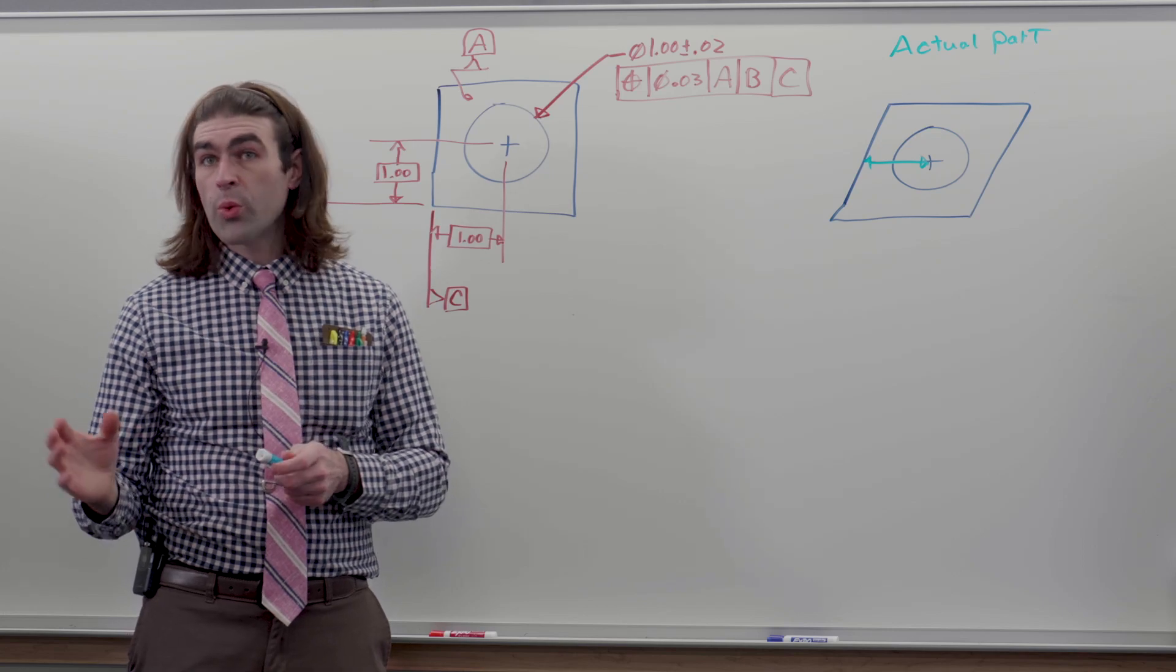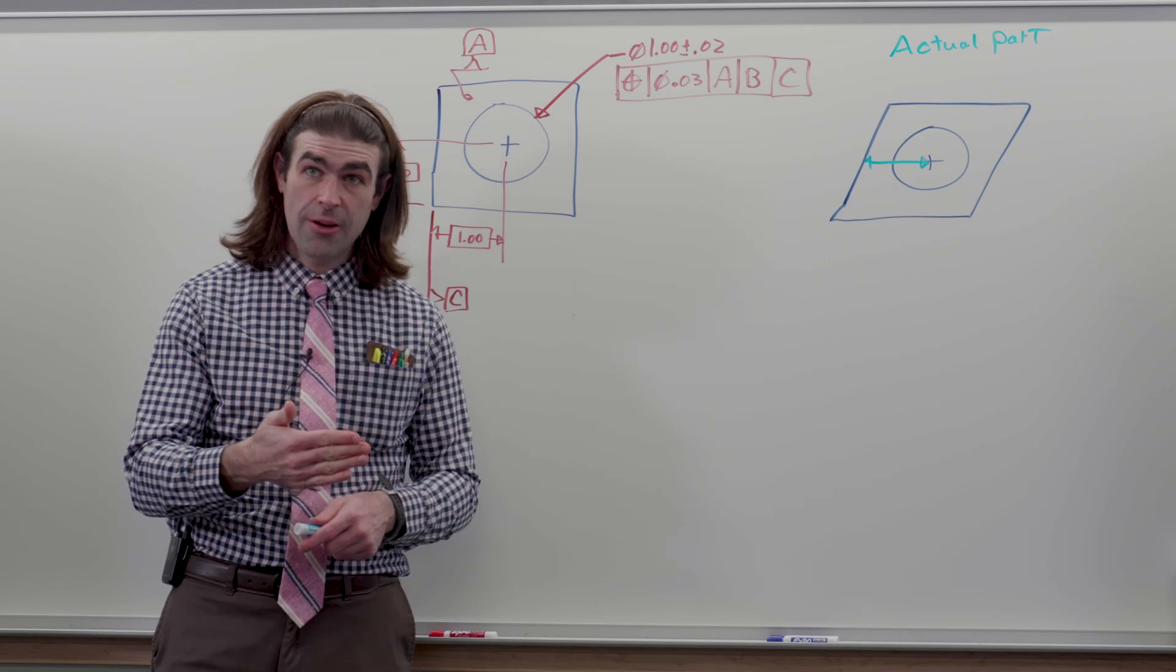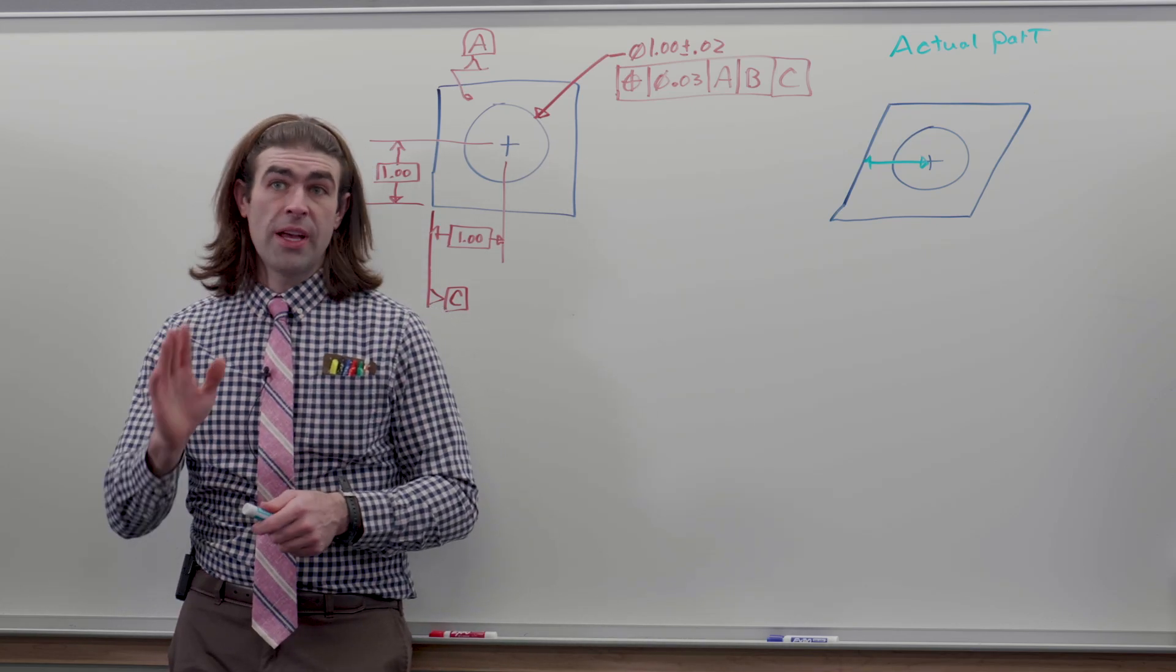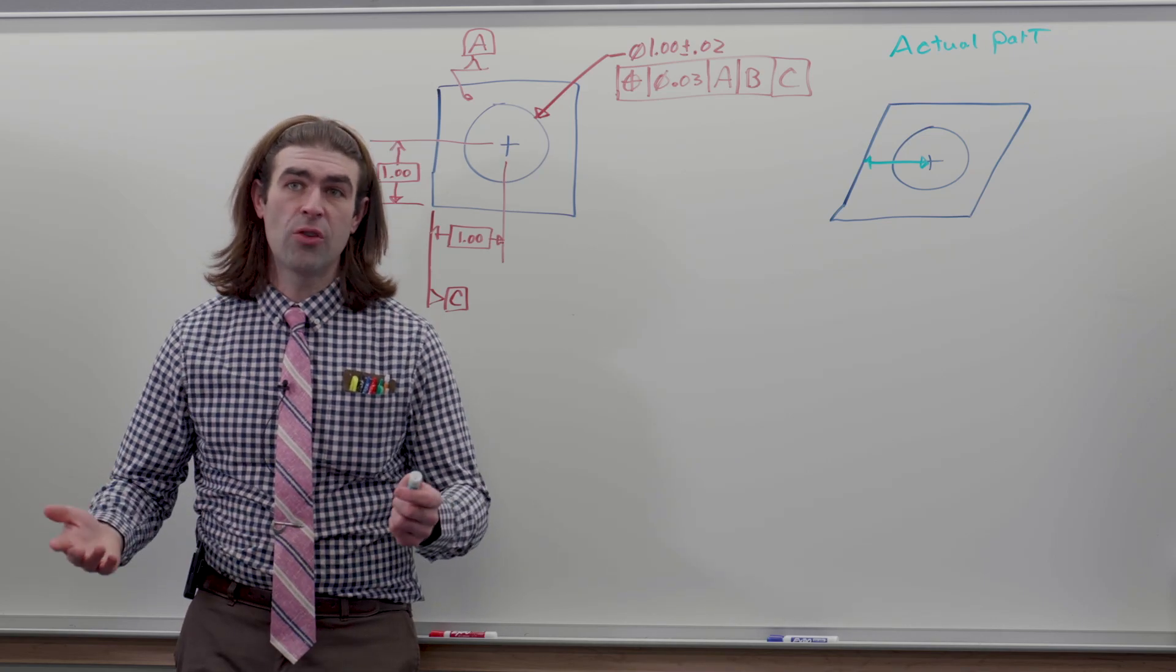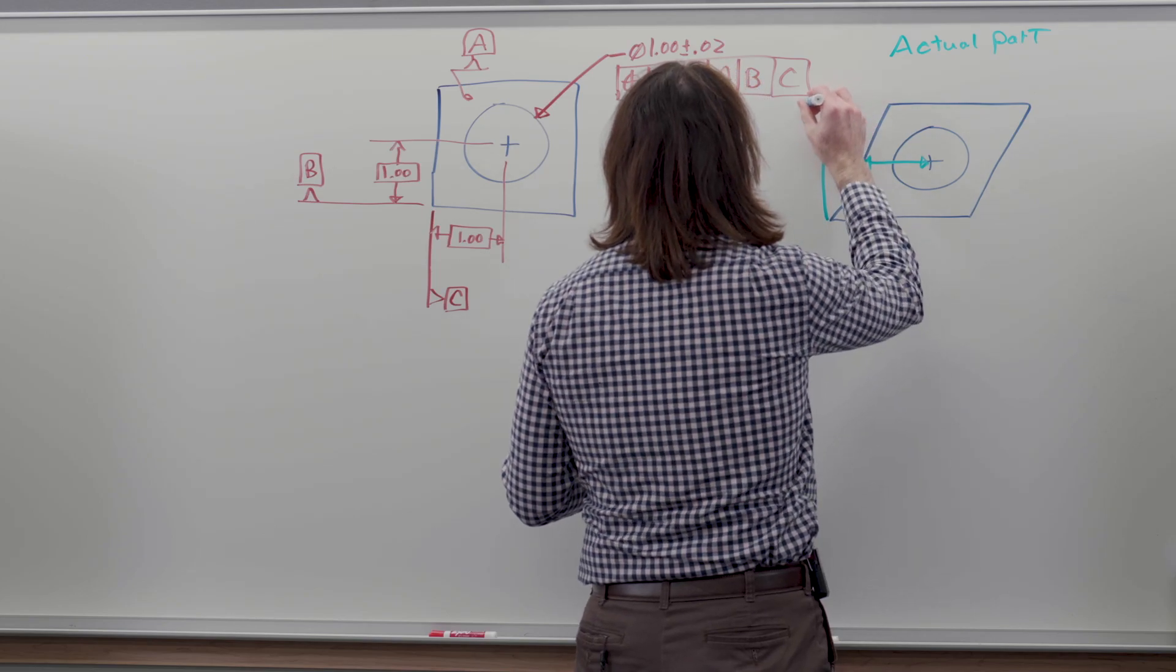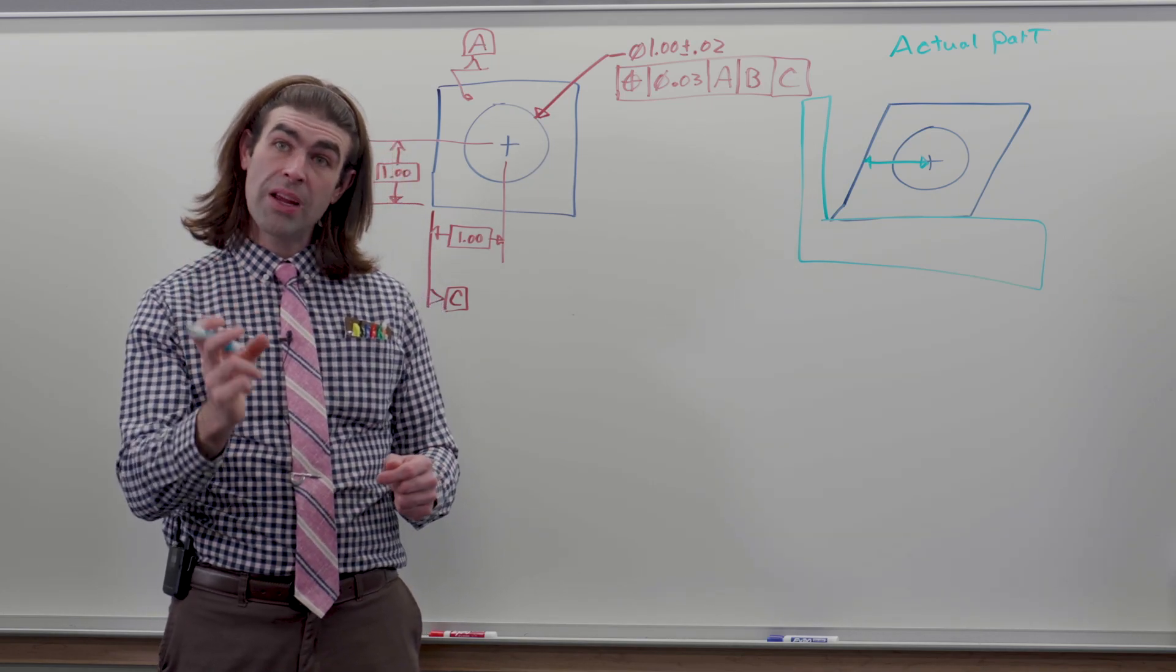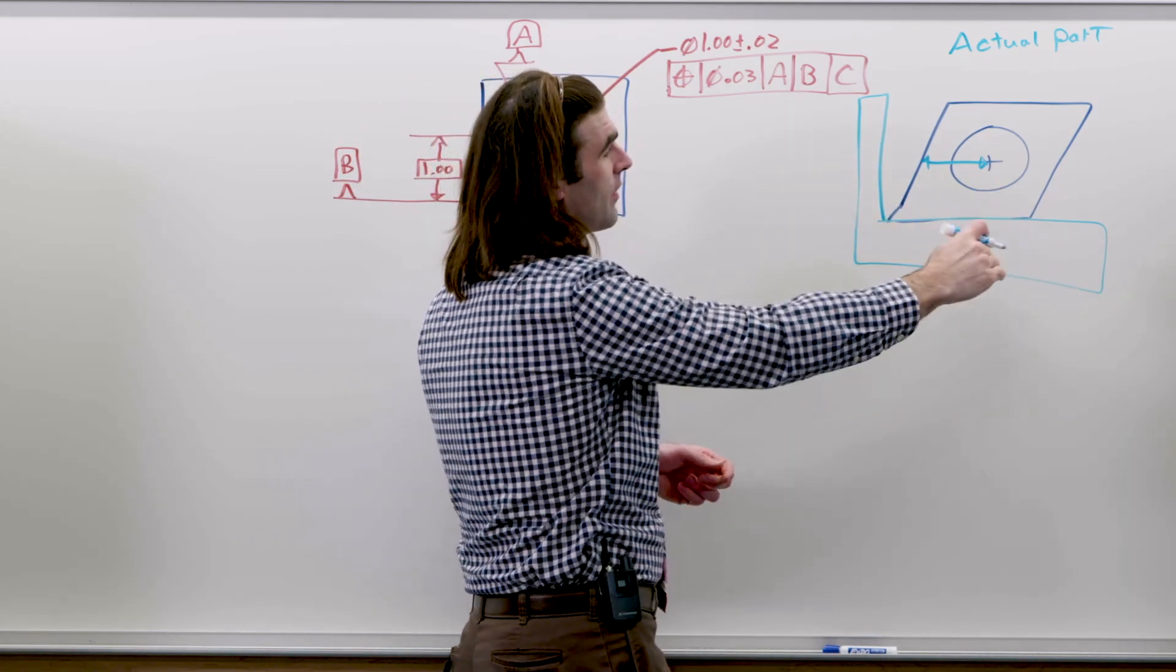But with GD&T, we're not supposed to measure from the feature to another feature. We're supposed to measure from the datum to the feature. So the datum simulators should be three perpendicular planes in this part that would usually be represented by, like, a surface plate and an angle plate, whatever inspection equipment you have. But it essentially looks something like that. So you set the part in there, and you're going to measure from the datum simulator. So this is perfectly 90 degrees to this.